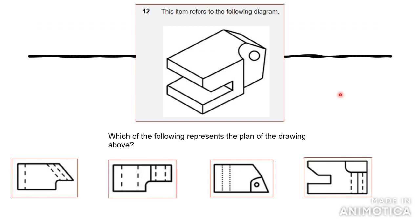Number 12 asks which of the following represents the plan view of the drawing above. You have a three-dimensional drawing and you want to know what it looks like when viewed from the top. As covered in previous videos, there are six different views of an object. This object has a hole on one end, so its plan view would include hidden lines because you can't see the hole looking straight down.